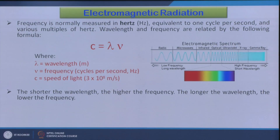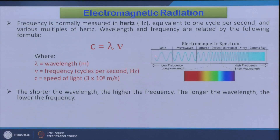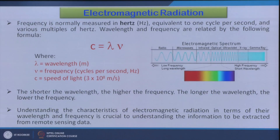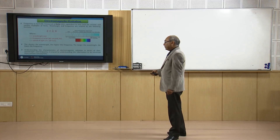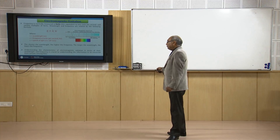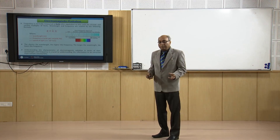This relationship tells us that the shorter the wavelength, the higher the frequency. Gamma rays have very short wavelength but high frequency. Radio waves have longer wavelength but less frequency — the longer the wavelength, the lower the frequency. Understanding these characteristics of electromagnetic radiation in terms of wavelength and frequency is crucial to understanding the information we try to extract from remote sensing data.